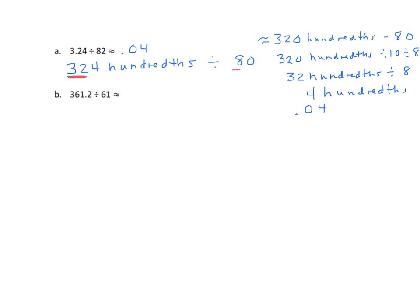Let's look at the next one. This one has a decimal, but we notice that my dividend is greater than my divisor, so we're going to do it in more traditional form and almost ignore the decimal. We'll round the divisor first — 61 rounds to 60. And 361 and 2 tenths is really close to 360. So we'll write this as 360 divided by 10, divided by 6. 360 divided by 10 is 36, divided by 6, and our rounded quotient is 6.